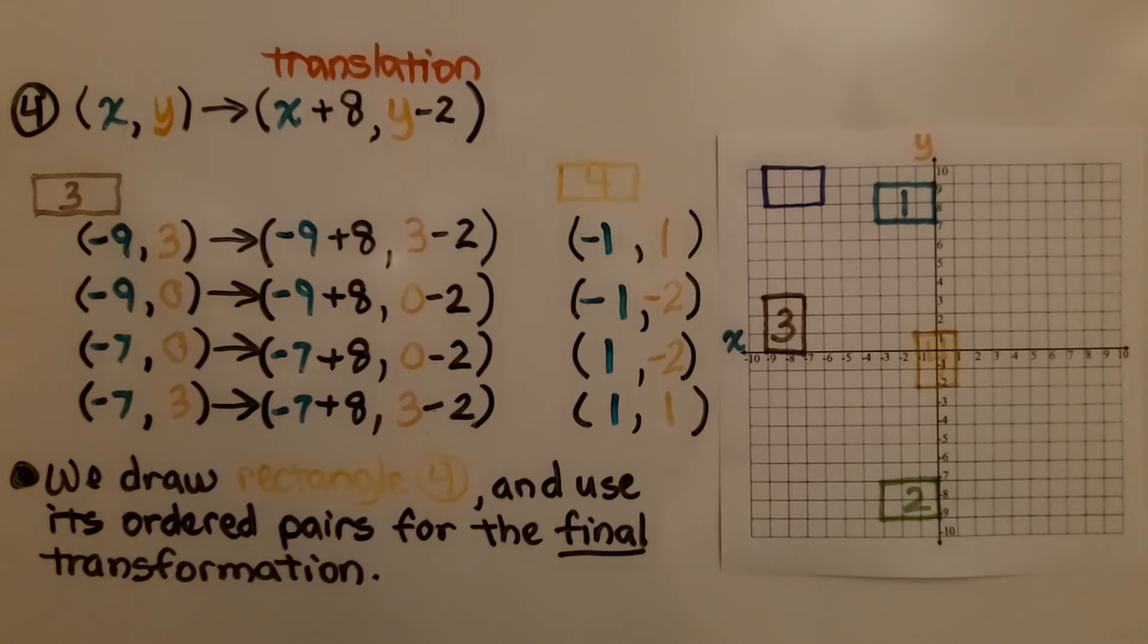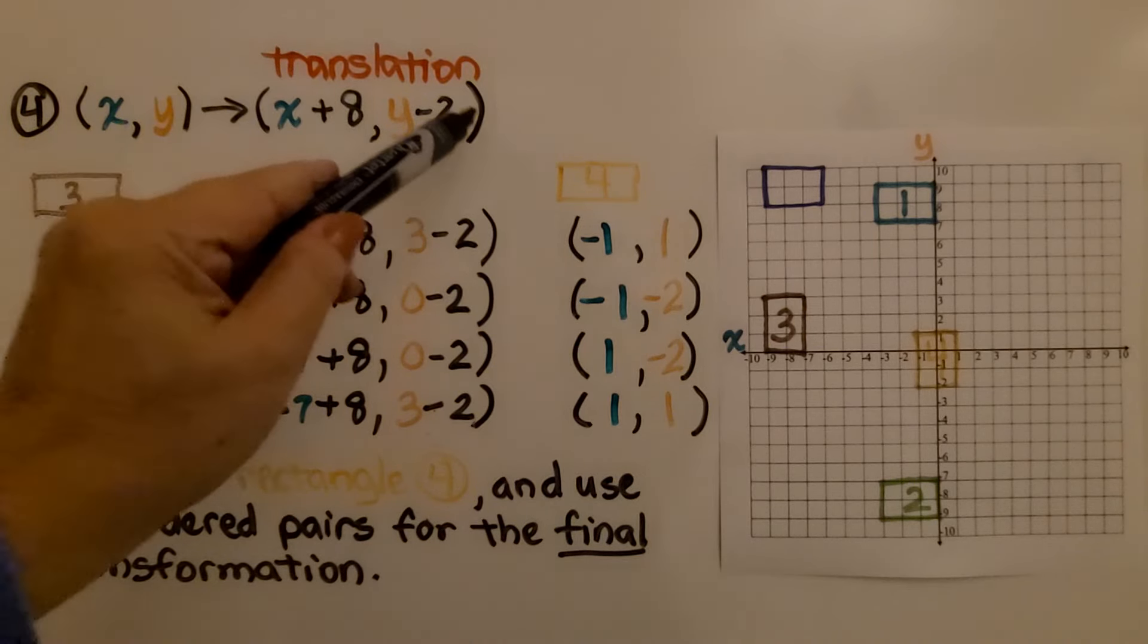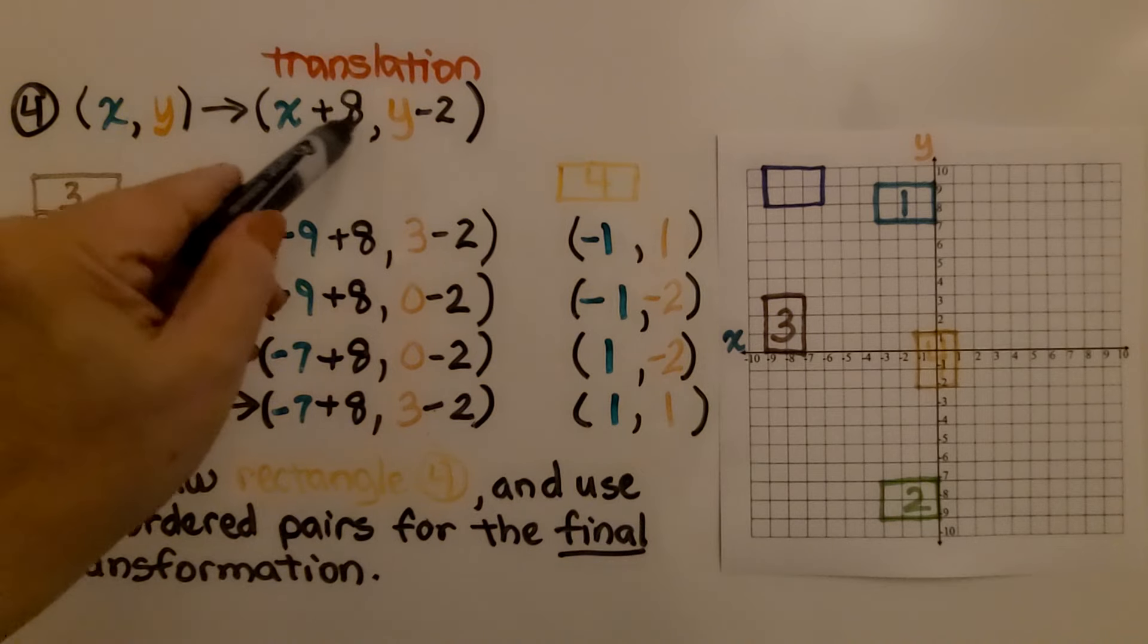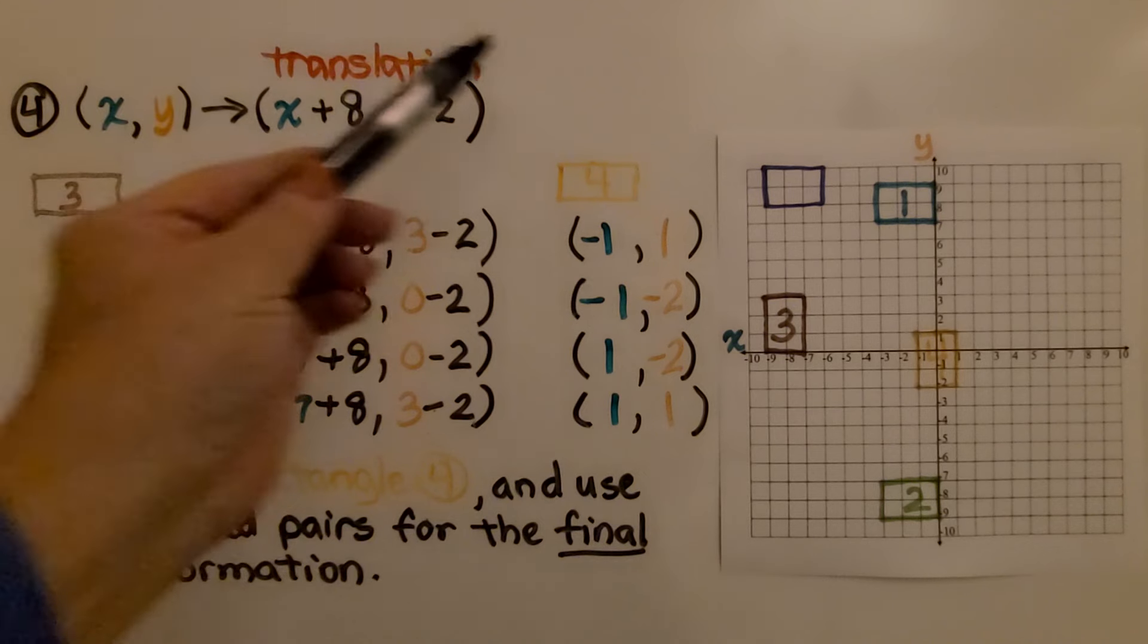For our fourth transformation in the sequence, it's telling us the x and y values are going to map to x plus 8, y minus 2. Because we've got a plus 8 and a y minus 2 here, we know it's a translation. We know it's going to slide somewhere.